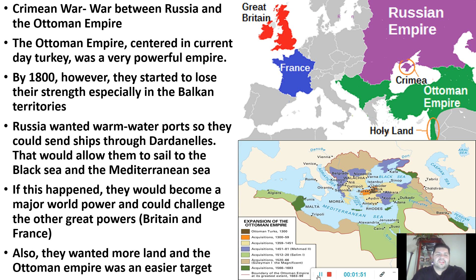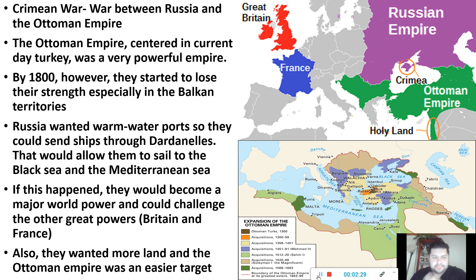The Crimean War was a war between Russia and the Ottoman Empire. The Ottoman Empire — we haven't really talked about them too much in our class — but they were a very powerful empire. Their headquarters was basically in what is Turkey today. By the 1800s, the 19th century, they were starting to lose their power. They weren't as strong as they were 200 or 300 years before, and they started to really lose strength in the Balkan areas. Russia thought: we need some warm-water port areas to trade.